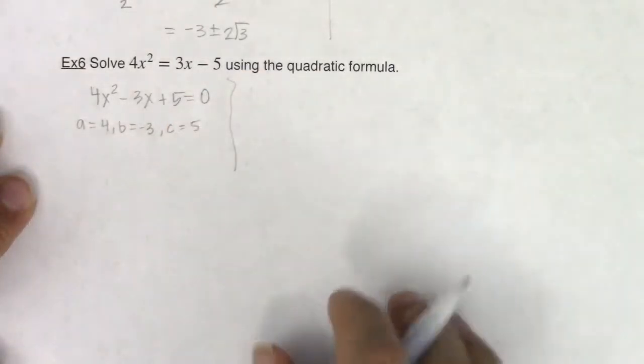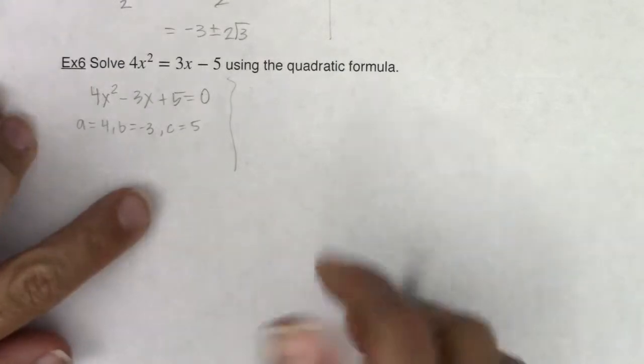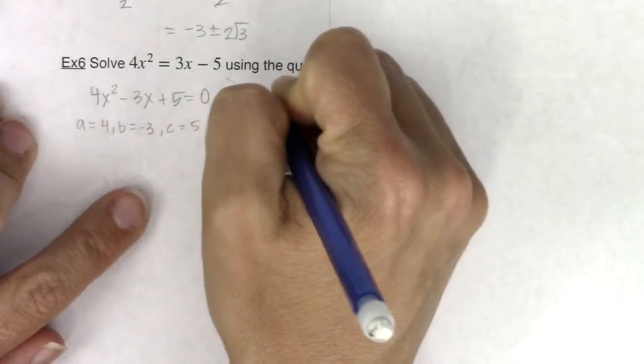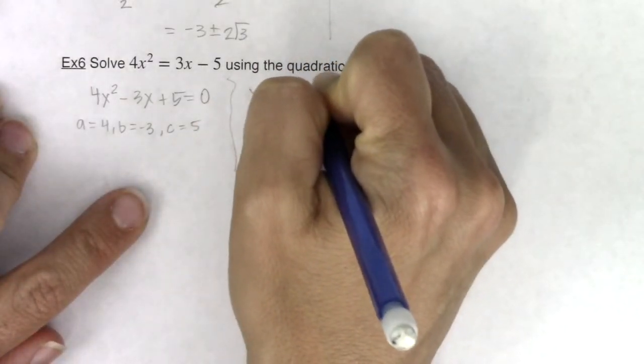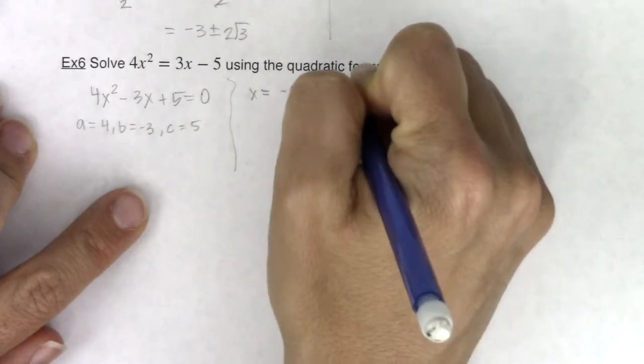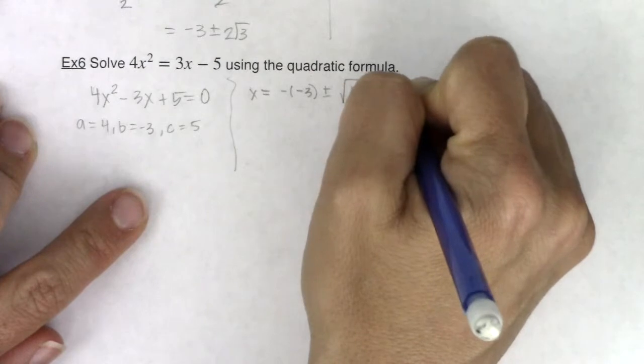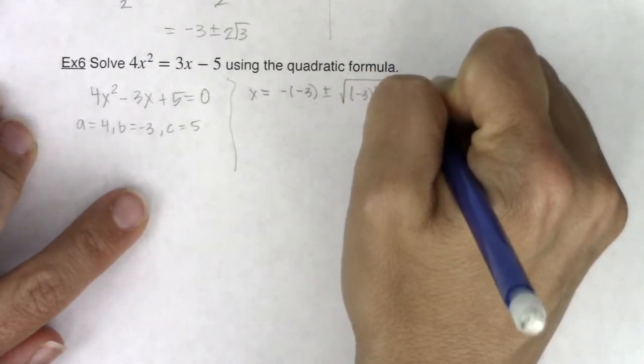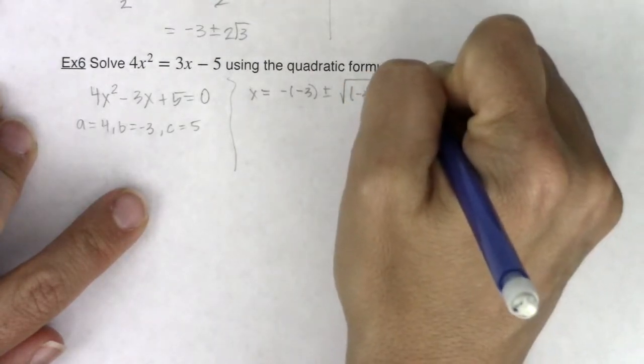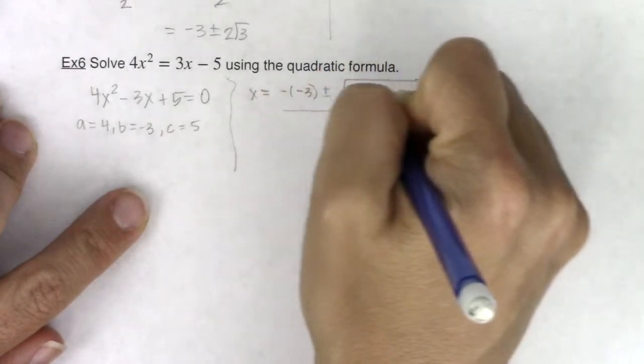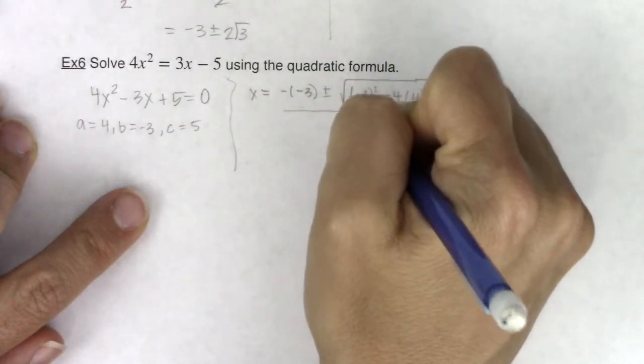Alright, and let me put a little division line there, and let's get going. So my solution will be x is equal to negative b plus or minus the square root of b squared minus 4 times a times c all over 2a.